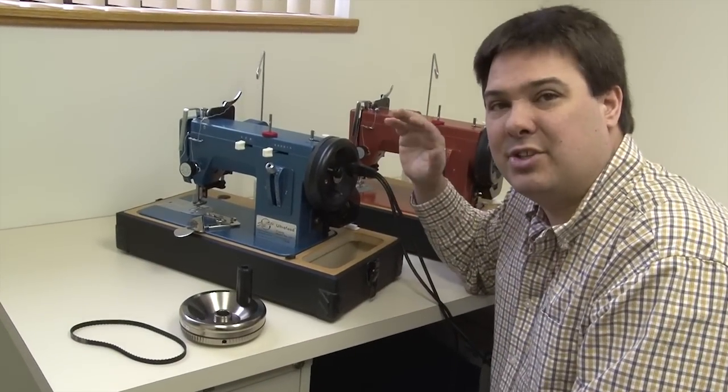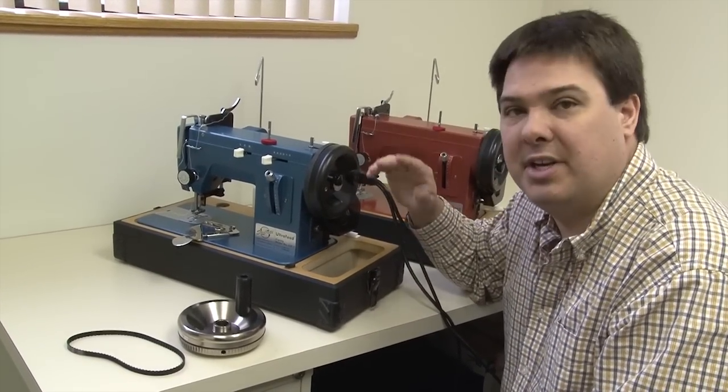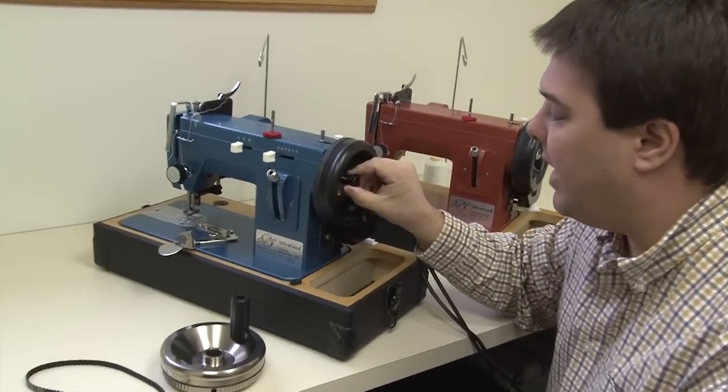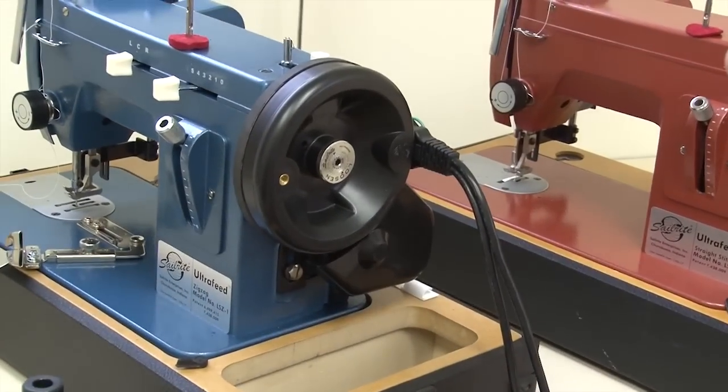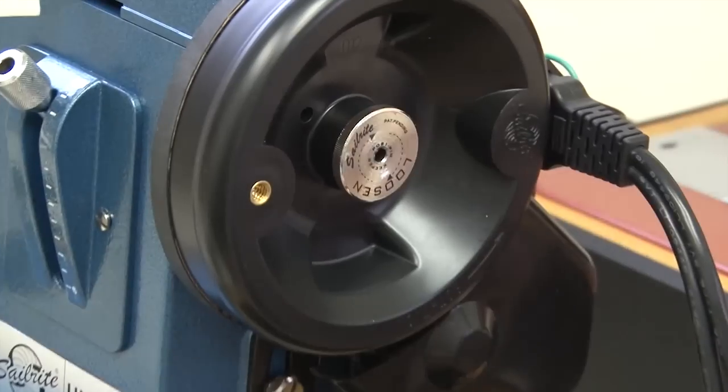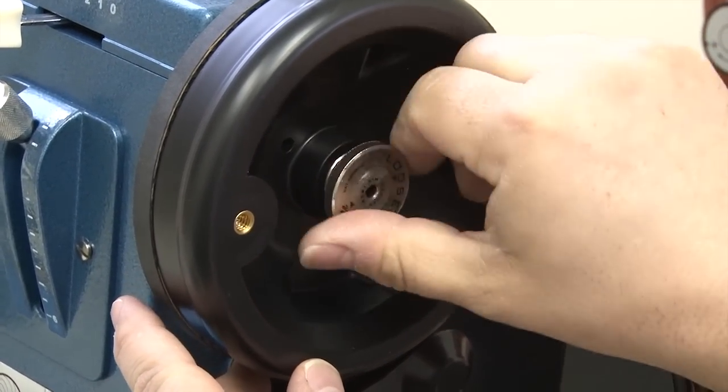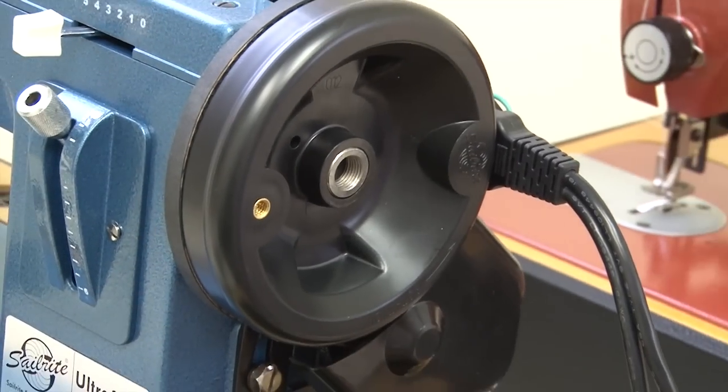Let me show you how to install the Monster 2 flywheel on the Ultrafeed sewing machine. It's really very simple. All you need to do is pull the posi pin out and set it aside. And then the posi pin nut is reverse threaded. So you'll notice the label with the arrows and it's telling you to turn it clockwise. And as you do that, that nut will just come straight off.